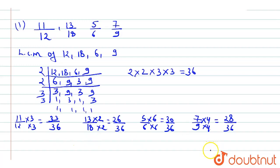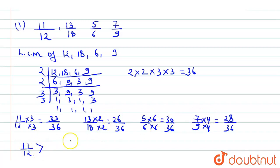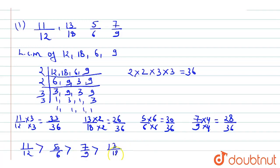Since all denominators are now the same, we can compare the numerators. The greatest is 30, which means 5/6 is greatest. After that comes 33/36, meaning 11/12, then 7/9 (28/36), and the smallest is 13/18 (26/36). So the descending order is: 11/12 > 5/6 > 7/9 > 13/18.